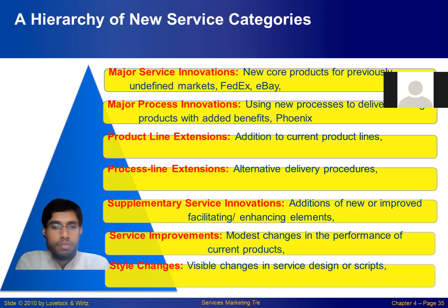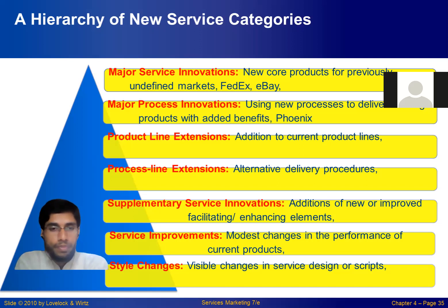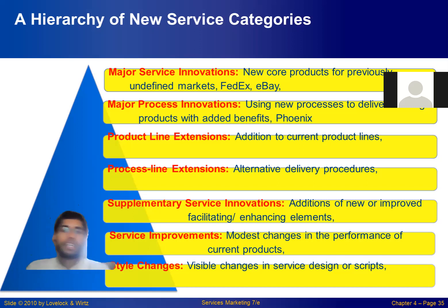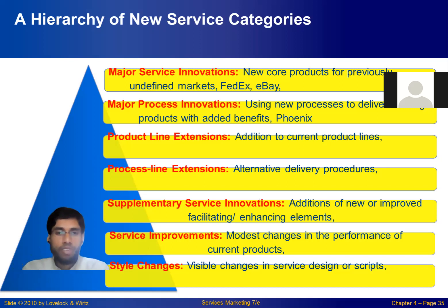This is an improvement tool — we have a blade to change, we will see the blade to change. This is an improved service. Number 3 is supplementary service innovation — it is a service.